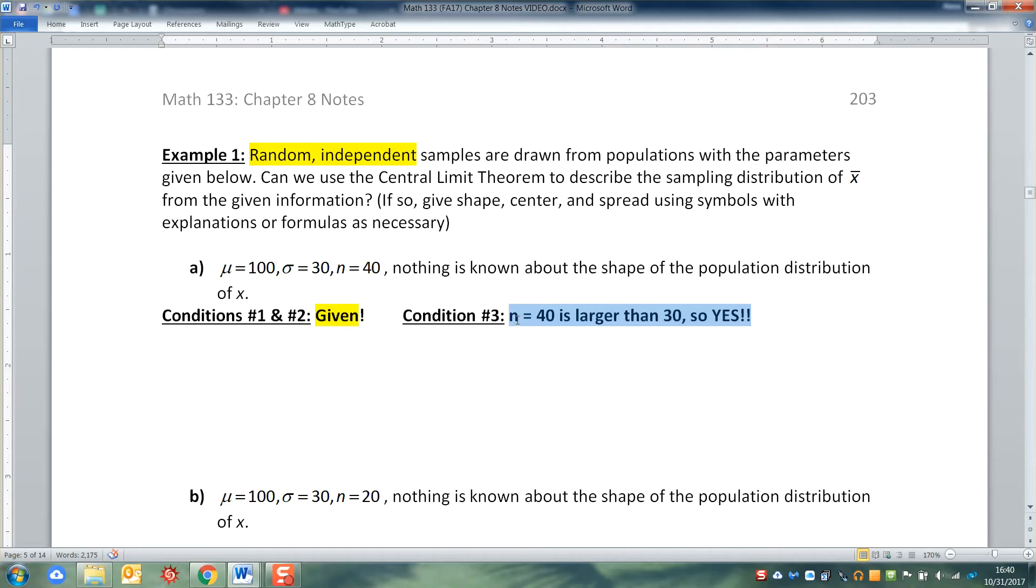We don't have to prove those two because they're given to us to begin with. Condition number three is the one we really have to work at a lot of the time, to be honest. Often one and two will be kind of either given, or we can kind of wave our hands at them a little bit. So once we know this, then we know the shape, the center, and the spread. The shape will be normal, right?